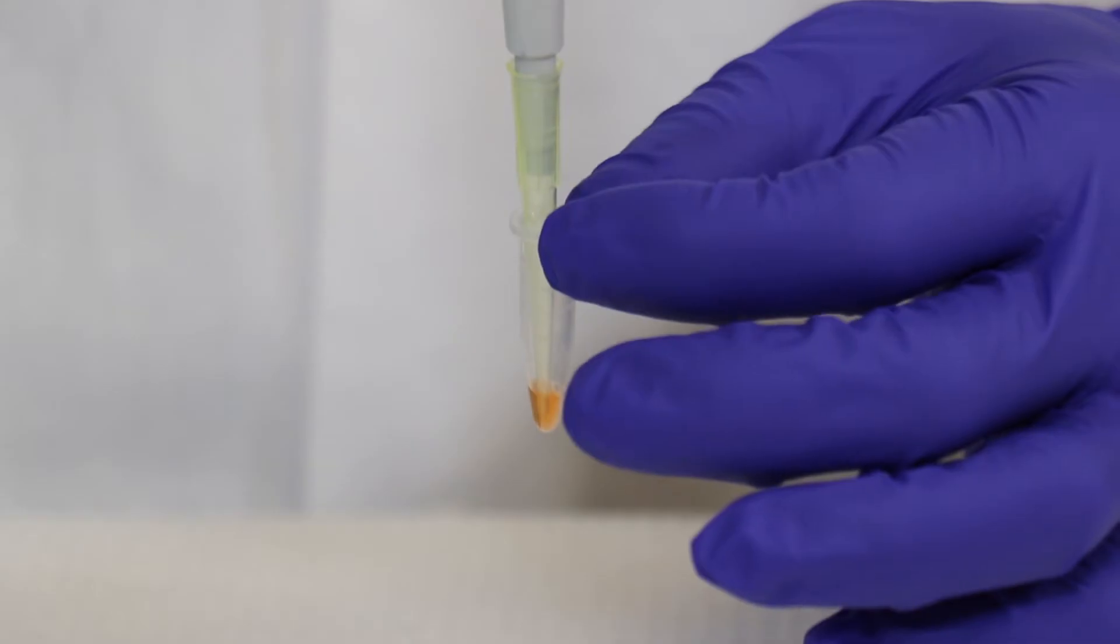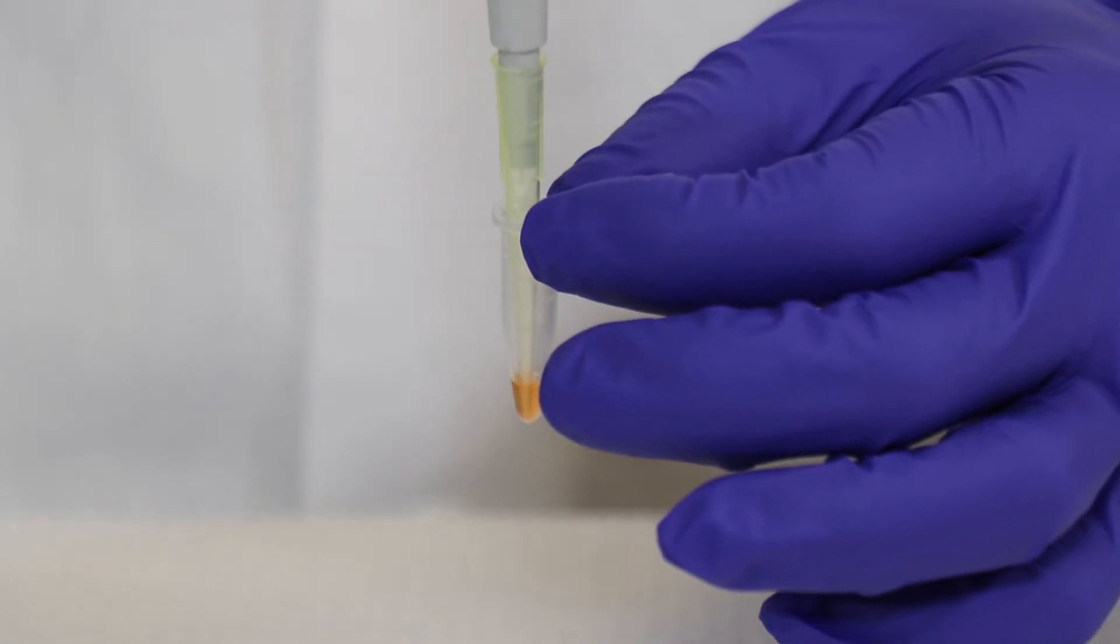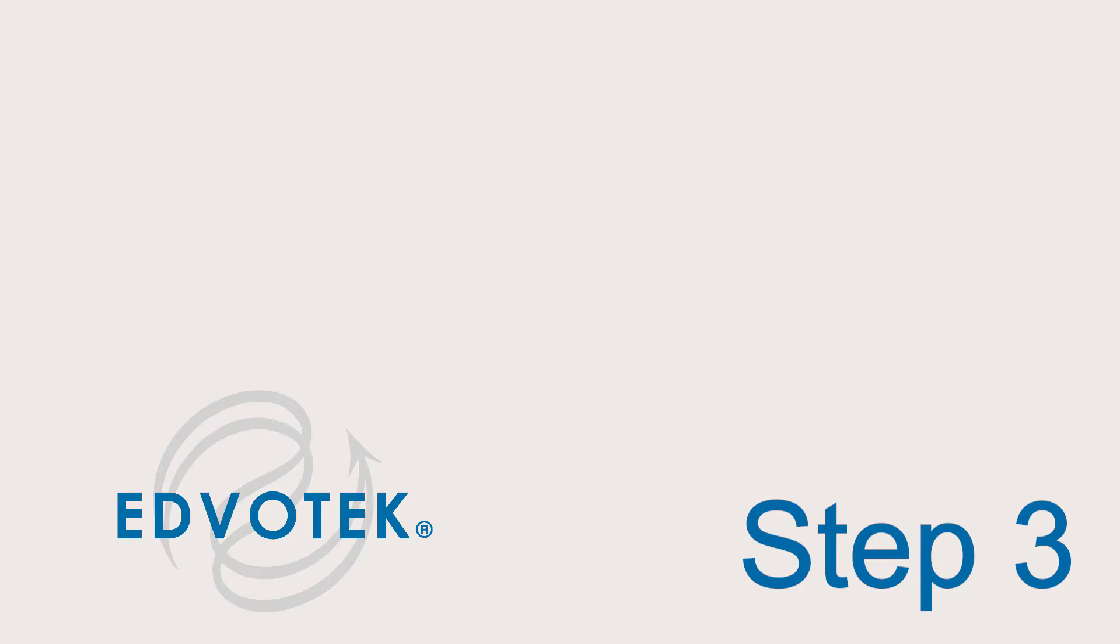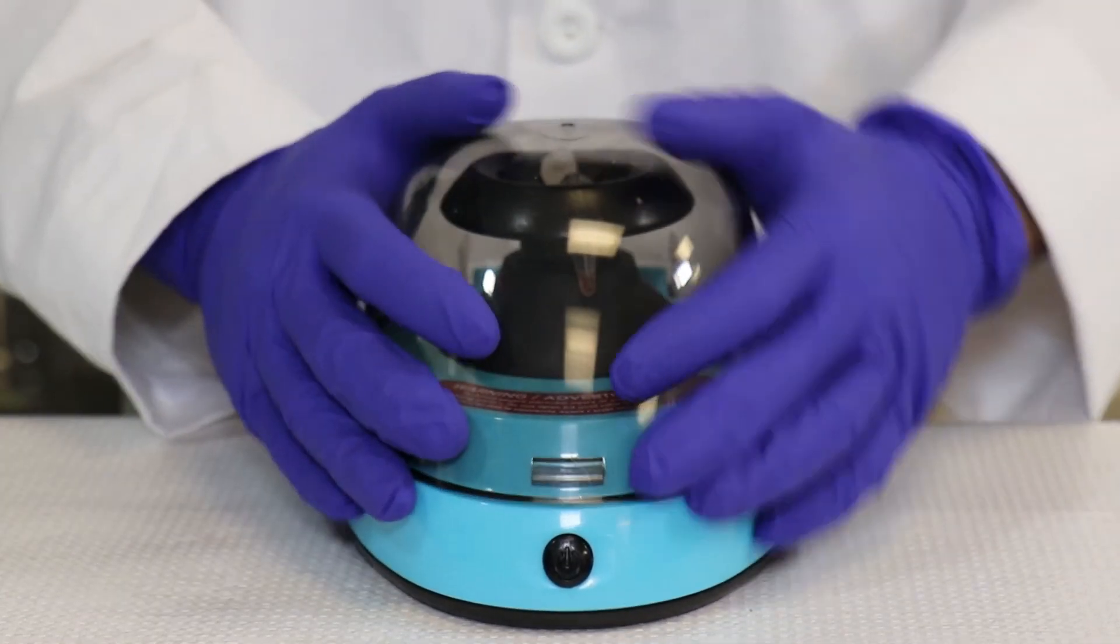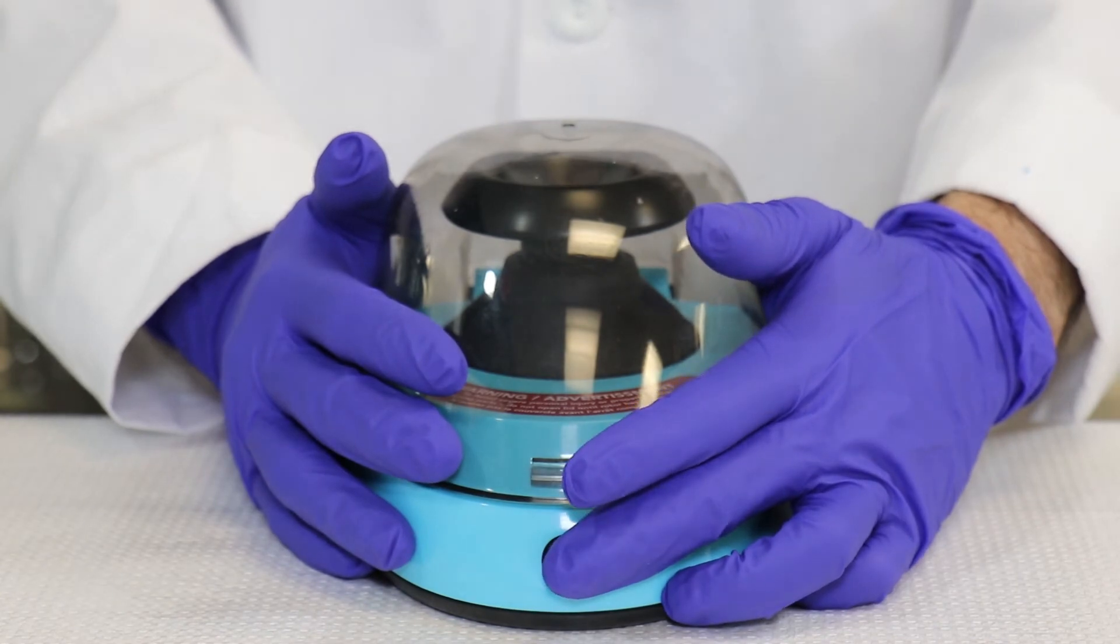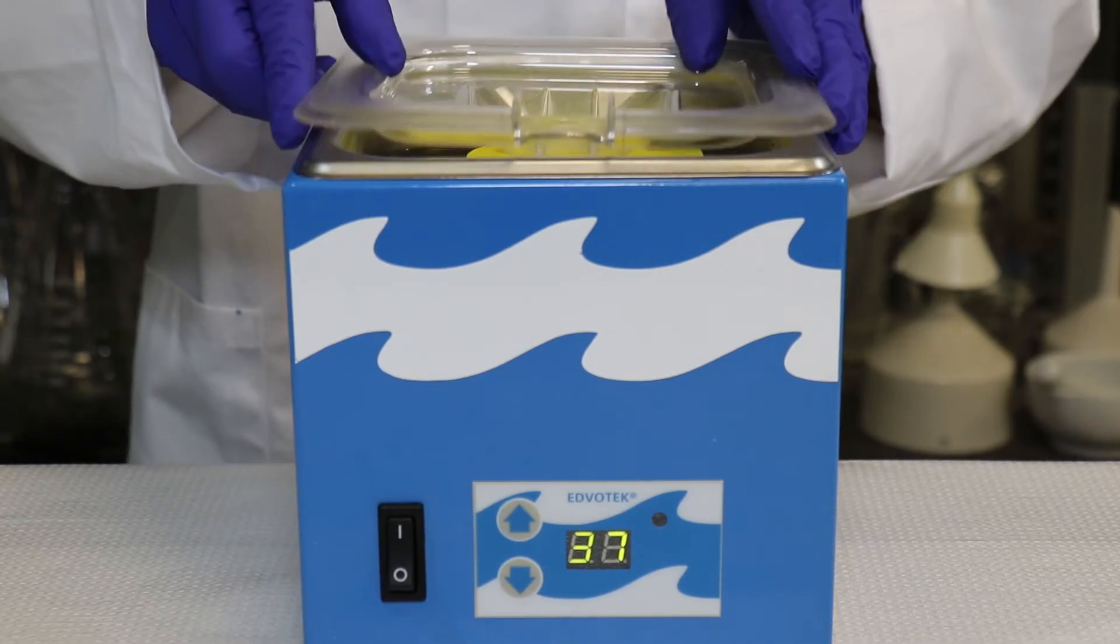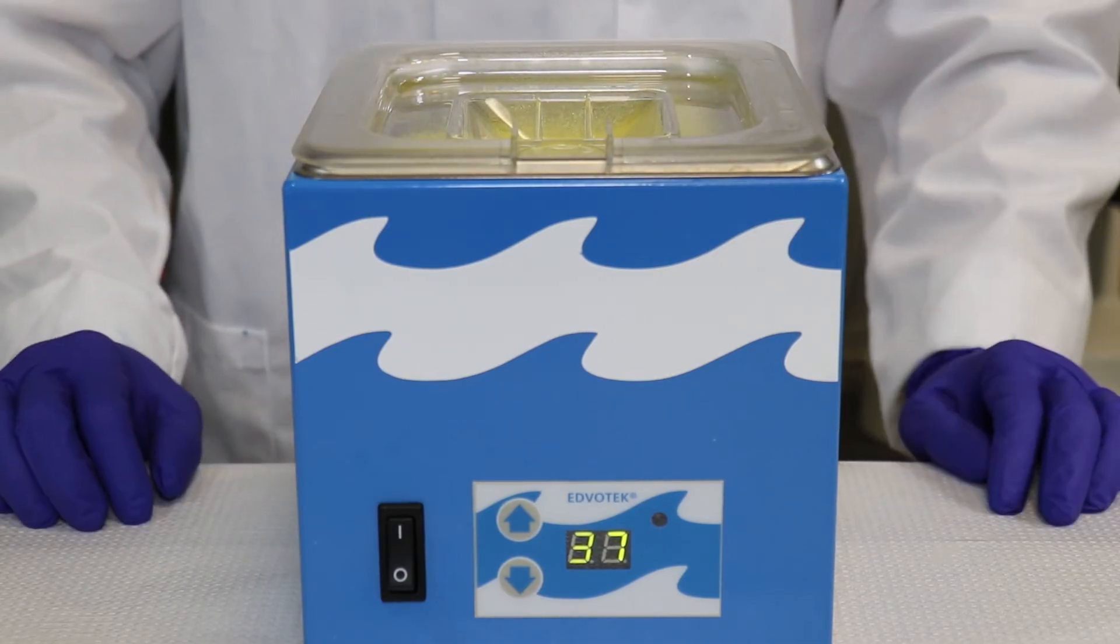Step 2: Gently mix the restriction digest Hae3 tube. Step 3: Quickly centrifuge to collect the sample at the bottom of the tube. Step 4: Incubate the digest for 30 minutes at 37 degrees Celsius.